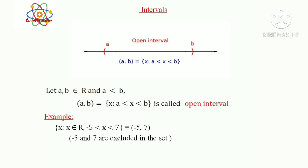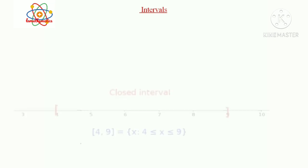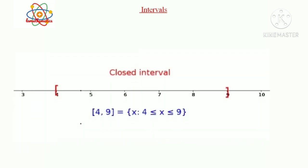Minus 5 and 7 are excluded in the set. From the figure, there is a real line from 4 to 9, with elements 4, 5, 6, 7, 8, and 9.